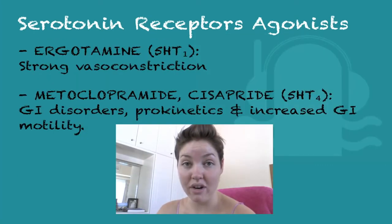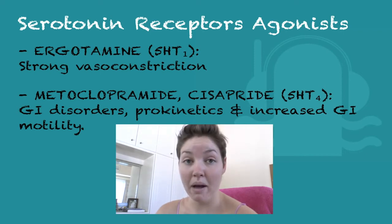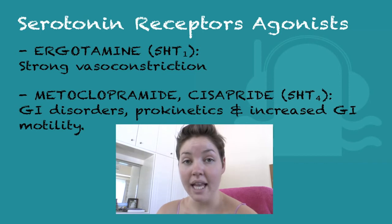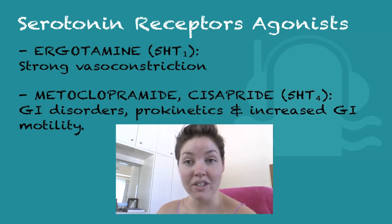Now I'm going to talk about the next drug, which is ergotamine. It's a 5-HT1A agonist and it's a partial agonist. It's given through oral, IV, rectal, and sublingual routes and it lasts for 24 hours. It gives strong vasoconstriction, which can lead to hypertension. It inhibits trigeminal nerve transmission. Side effects are nausea, vomiting, uterine contractions, and fetal damage.